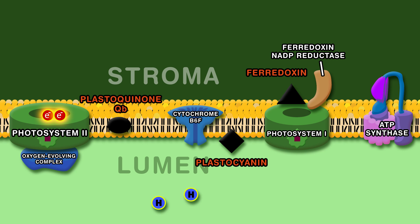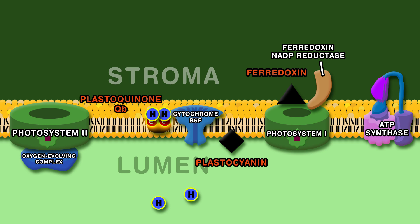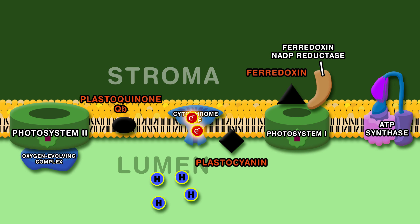Next, the electrons are grabbed by Plastoquinone QB from the reaction center's chlorophylls. The electrons are shuttled to Cytochrome B6F by Plastoquinone QB, which also transfers two protons from the stroma to the lumen. This increases the proton gradient, which continues to grow as Cytochrome B6F transfers another two protons.